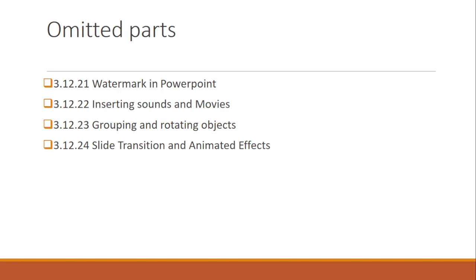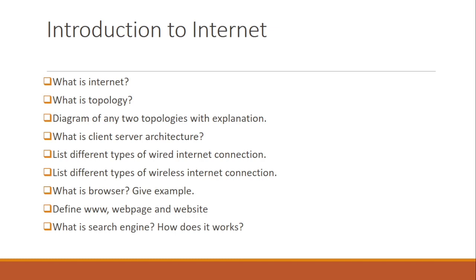Now moving to chapter 4, which is Introduction to the Internet. See the definition of internet, the definition of topology, and the different types of topologies with their names and definitions: ring topology, star topology, bus topology, and mesh topology — along with their advantages and disadvantages. Study at least two topology diagrams, mostly star or bus topology. Also see client-server architecture, where both computers act as server and client at different times.